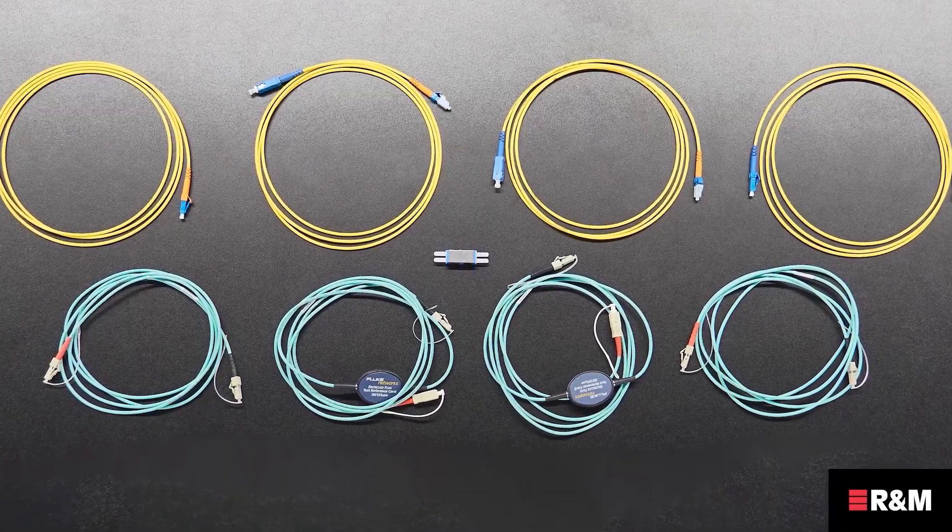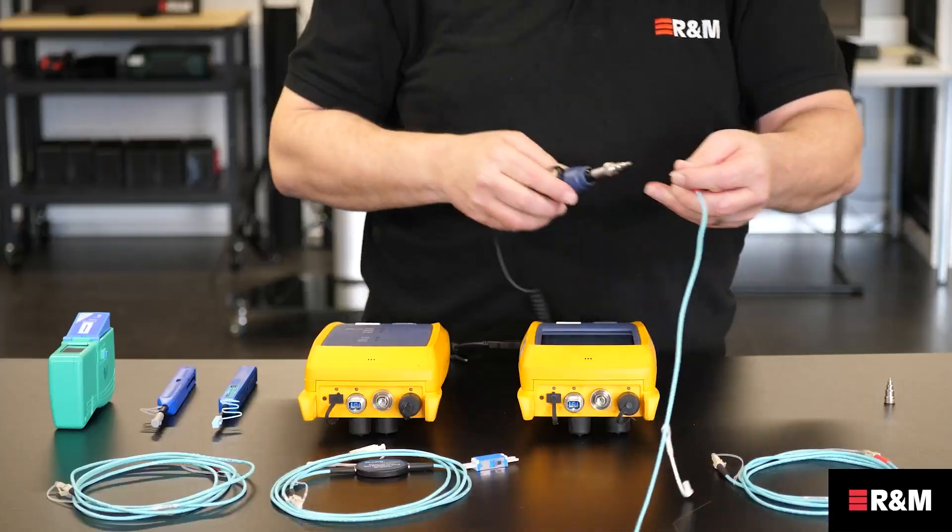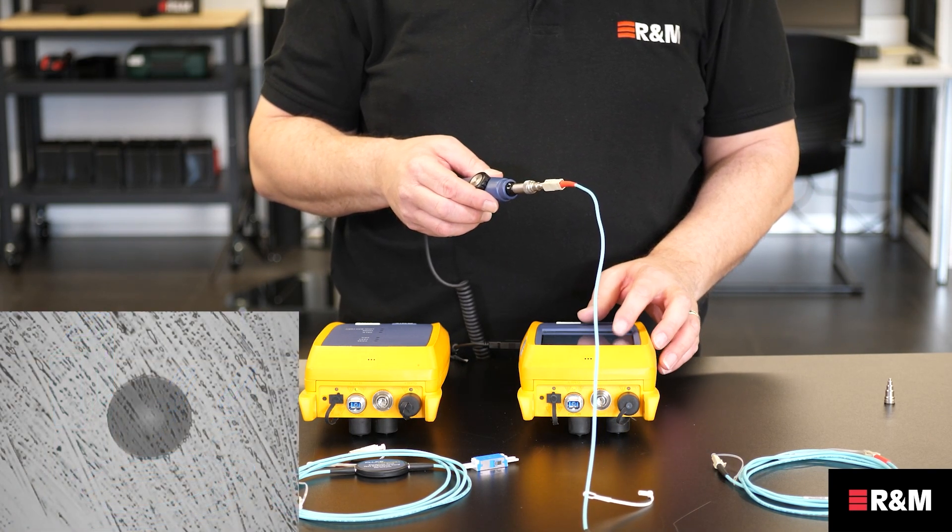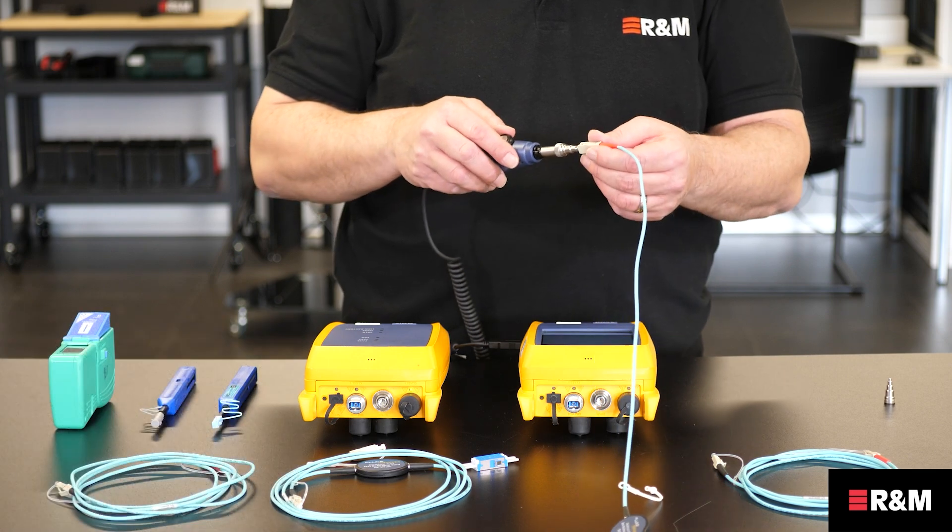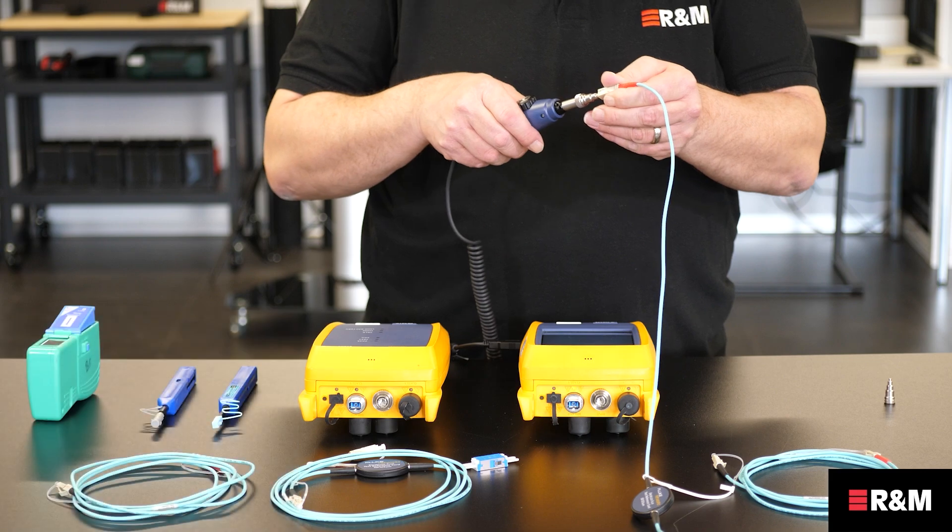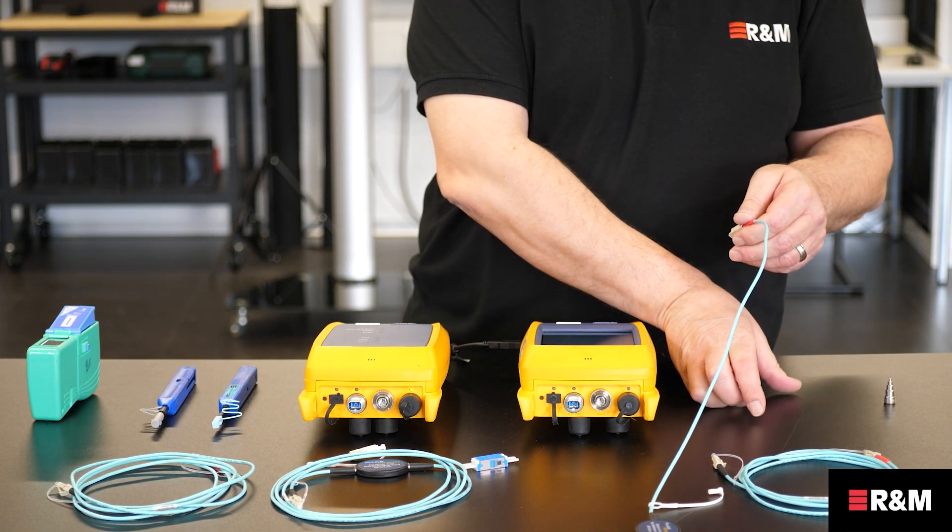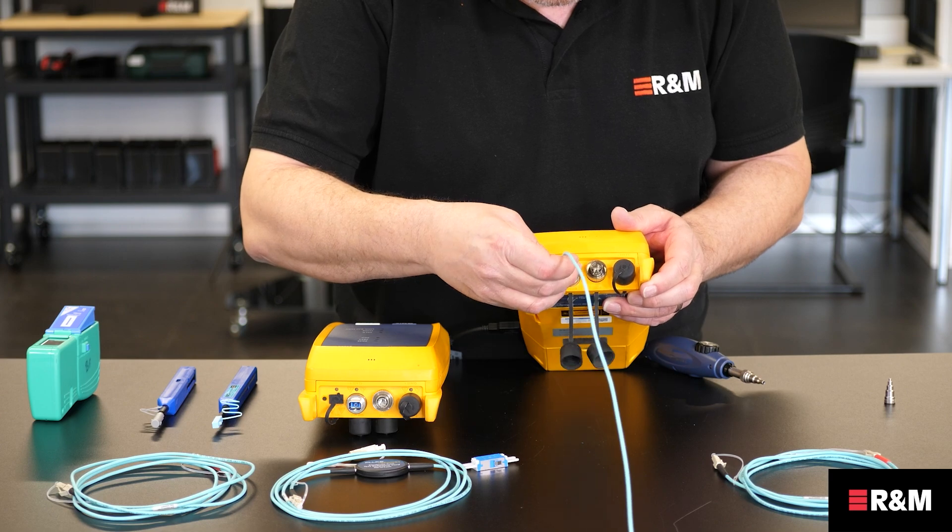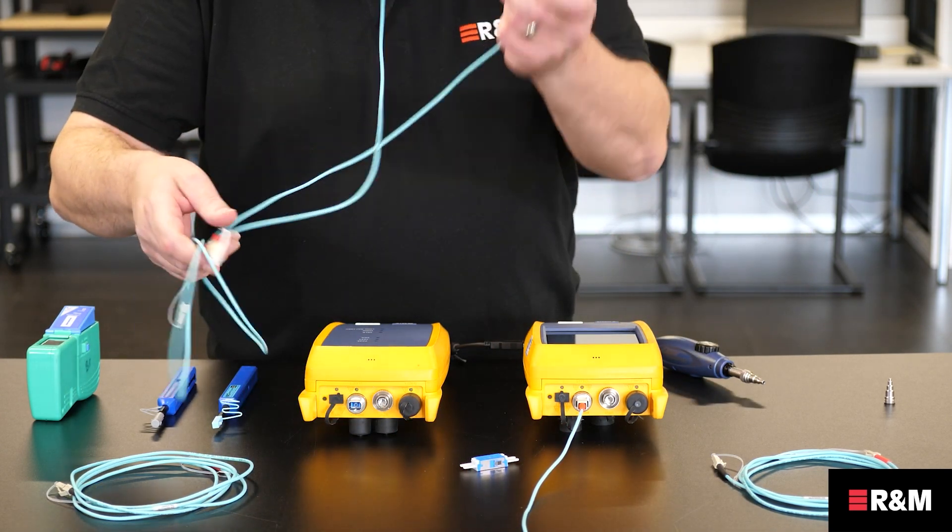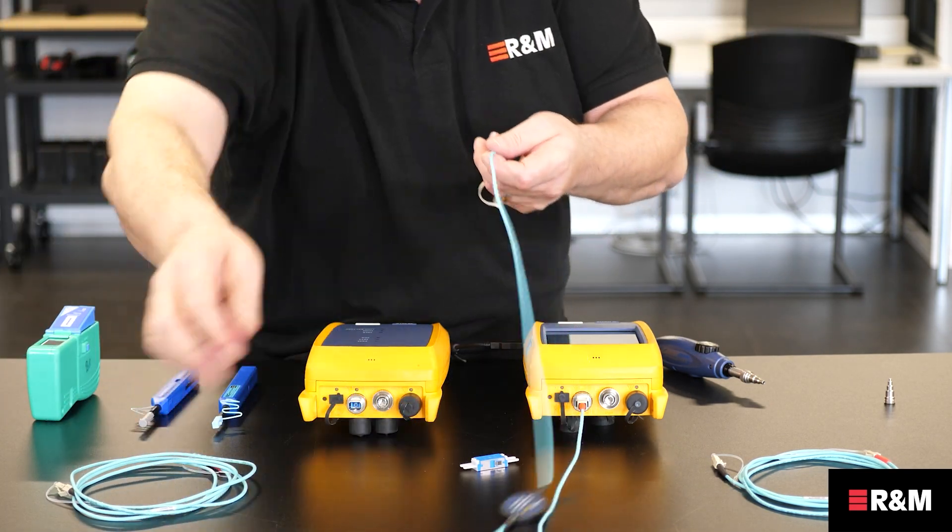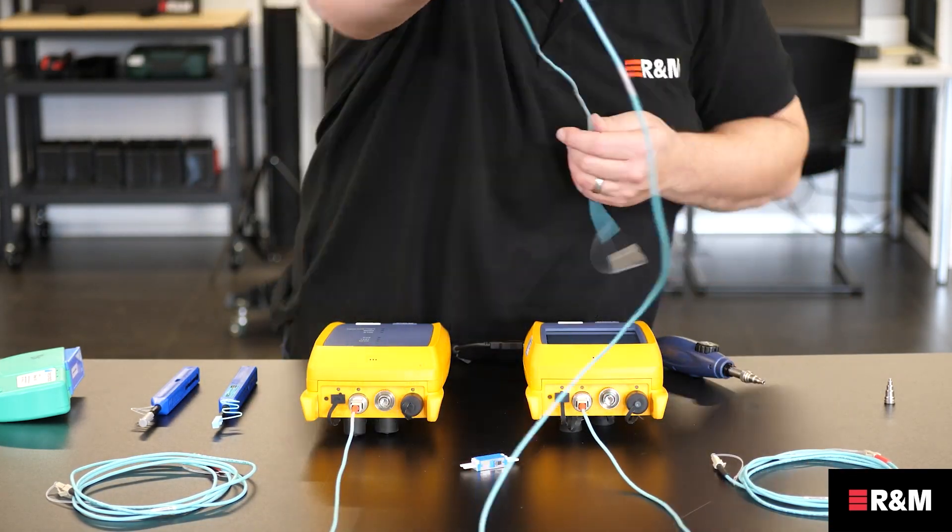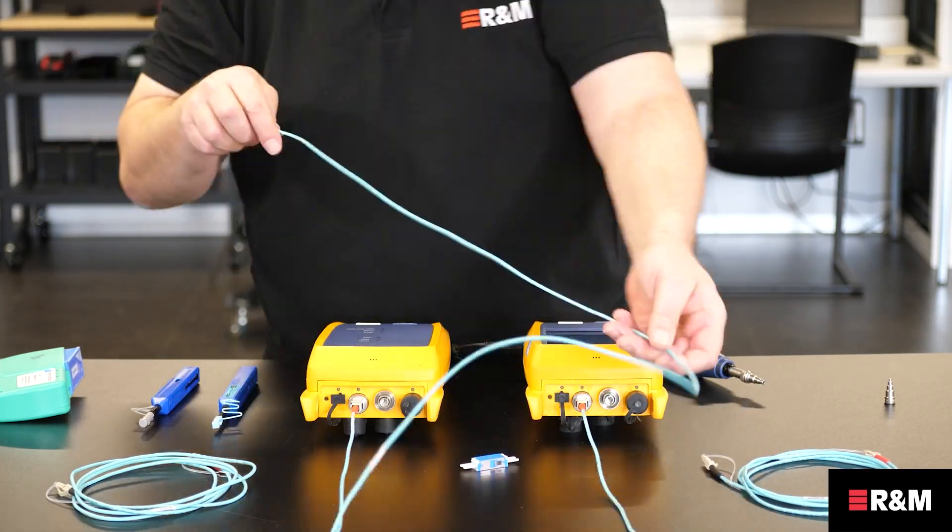Next, we need to prepare the test reference cords. This is done firstly by inspecting the end face. Only if it is dirty do you need to clean it. Please re-check after cleaning to ensure the end face is truly clear of dirt. Once cleaned, it can be inserted into the main tester. This procedure must then be repeated for all ends of the reference cords before being connected to the main and remote testers. Please note that many manufacturers recommend that you measure the loss of your test reference cords each time you set the reference.